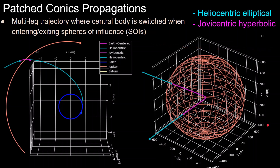For the case of Voyager 2, this means we can split up its trajectory by when it is performing a flyby — which is a hyperbolic orbit at some planet like Earth, Jupiter, or Saturn — and when Voyager 2 is in between planets, which is modeled as an elliptical heliocentric orbit. In the diagram on the left, the blue here is Earth, the cyan is the trajectory modeled as an elliptical heliocentric orbit, and the purple is when it's modeled as a hyperbolic Jupiter orbit.